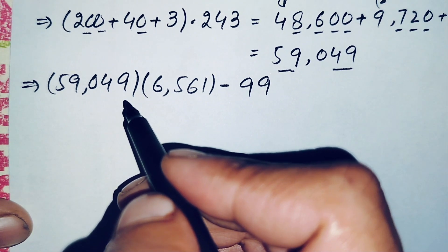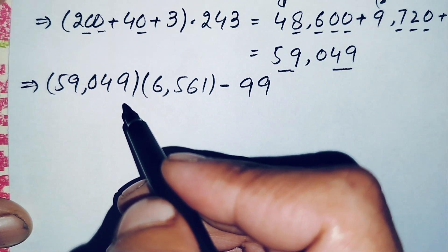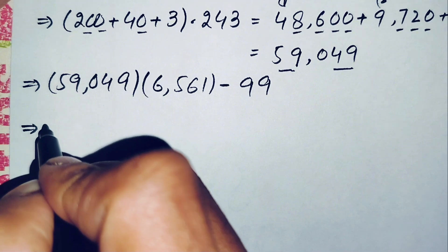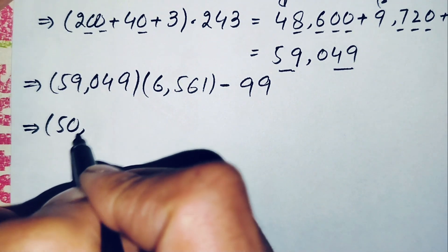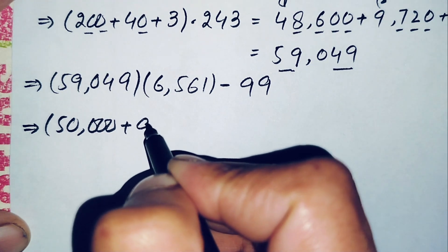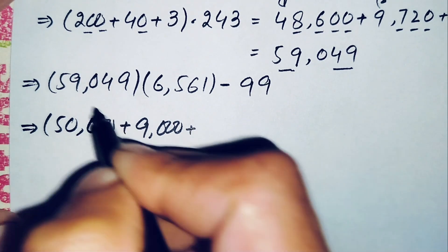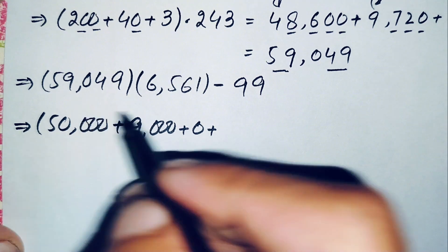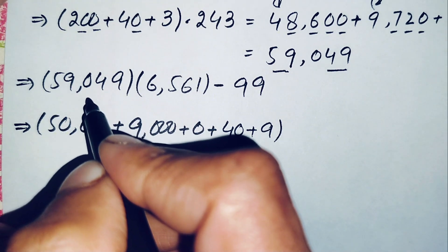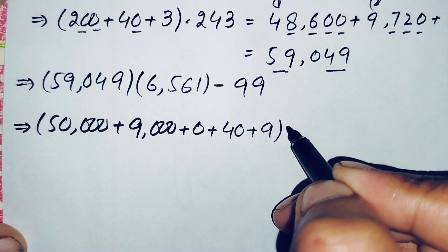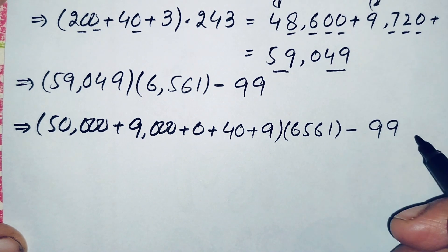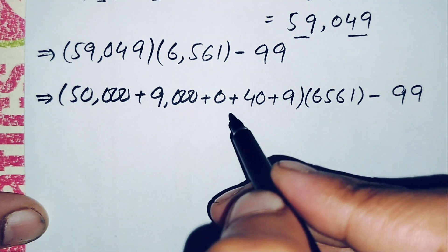Now we have to multiply 59049 times 6561 without a calculator. We write 59049 as the sum of 50000 plus 9000 plus 0 plus 40 plus 9. By adding these five numbers it gives back 59049. Now we multiply 6561 by each of these numbers.